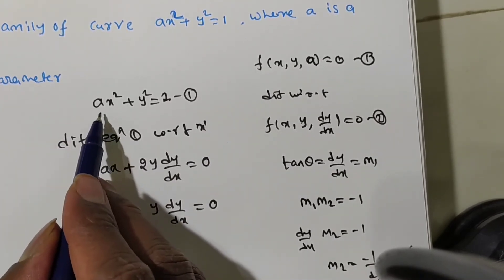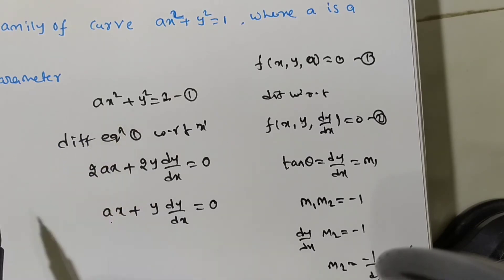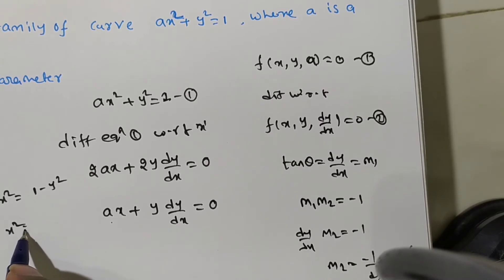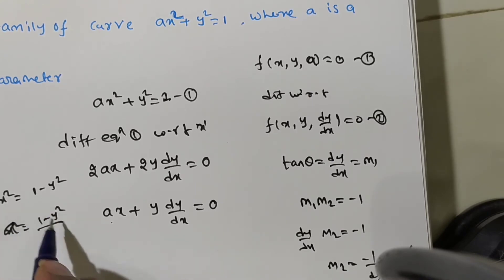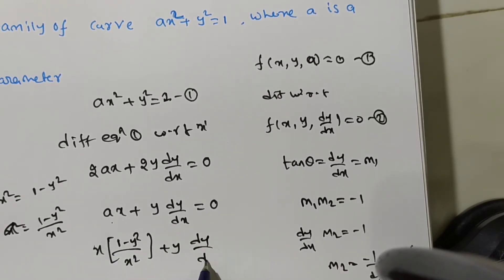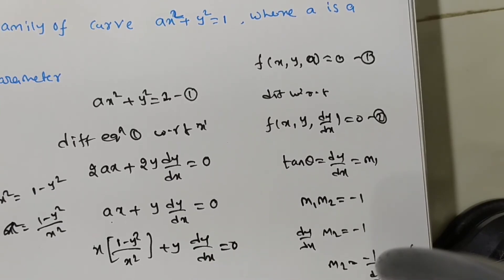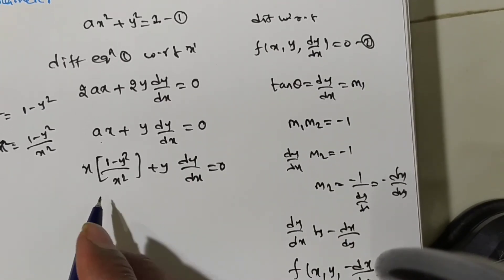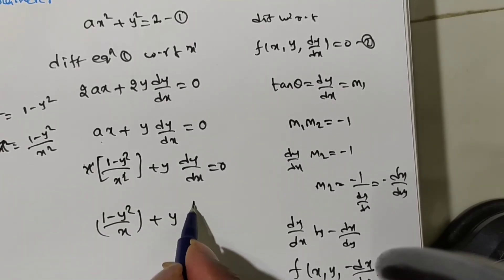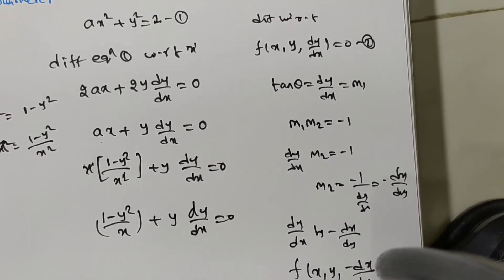Eliminate A from the two equations. From equation 1: Ax² = 1 − y², so A = (1 − y²)/x². Substituting into Ax + y·(dy/dx) = 0 gives x·(1 − y²)/x² + y·(dy/dx) = 0, which simplifies to (1 − y²)/x + y·(dy/dx) = 0. There is no parameter remaining, so this is the differential equation of the family of curves.